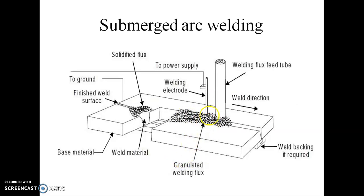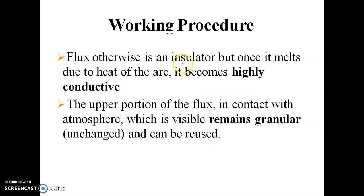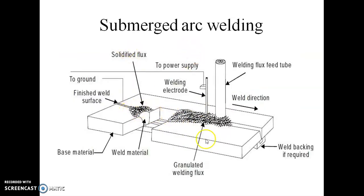The electrode is submerged under the flux powder — the electrode is in the granulated welding flux in the form of granules. Flux is otherwise an insulator, but once it melts due to the heat of the arc, it becomes highly conductive. The upper portion of the flux in contact with the atmosphere remains granular and can be reused. Some part of the flux becomes slag and the remaining granular flux can be reused.